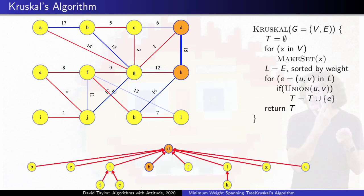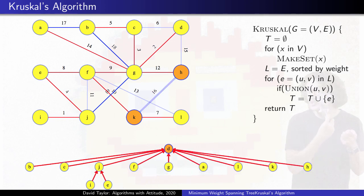We could stop once we know we've added V-1 edges, or not. When we finish, we should check that we have V-1 edges. If we don't, the graph wasn't connected to begin with.